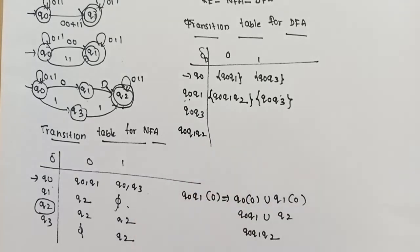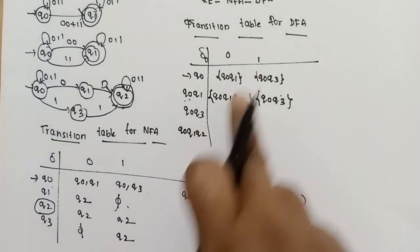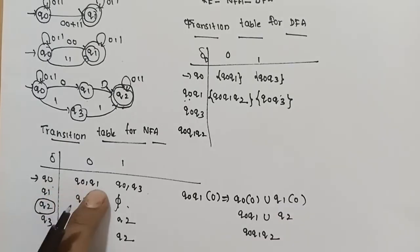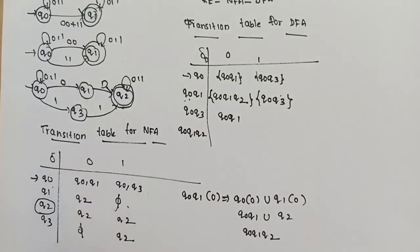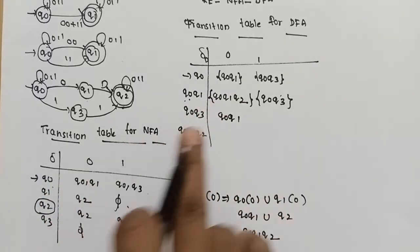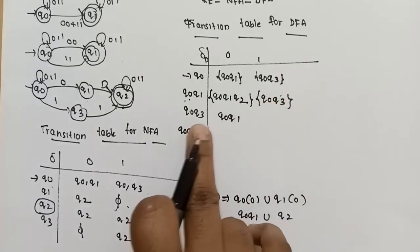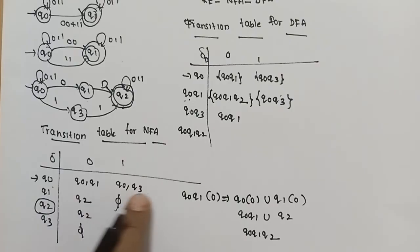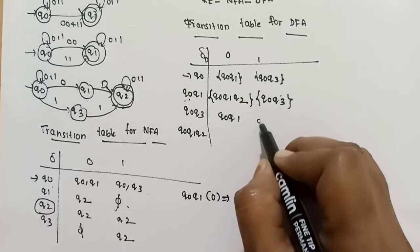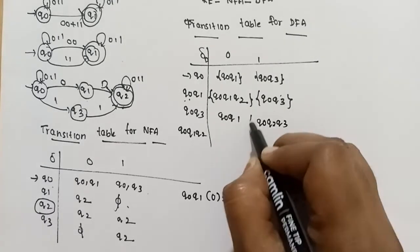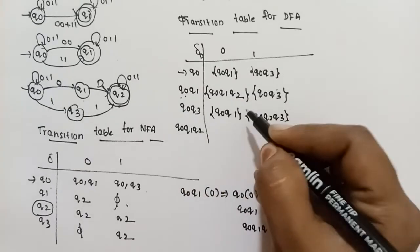Expanding {Q0, Q3}: {Q0, Q3} on 0 = Q0 on 0 union Q3 on 0 = {Q0, Q1} union empty = {Q0, Q1}. {Q0, Q3} on 1 = Q0 on 1 union Q3 on 1 = {Q0, Q3} union {Q2} = {Q0, Q2, Q3}.